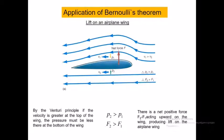Another application is lift on an airplane wing. Because of the wing's special shape, the air velocity above the wing (V₂) is higher than the velocity below. According to Bernoulli's theorem, higher velocity means lower pressure. So pressure at the bottom is higher than at the top, and this pressure difference generates the upward lifting force on the airplane wing.